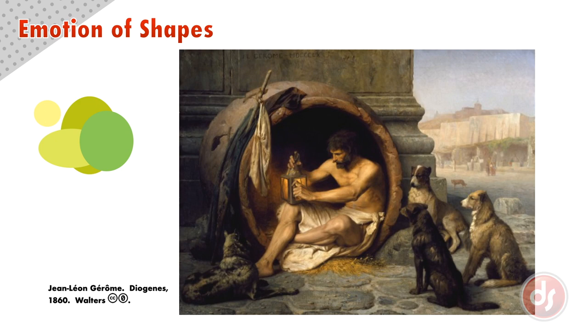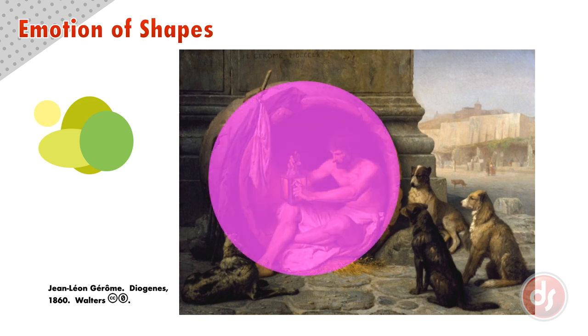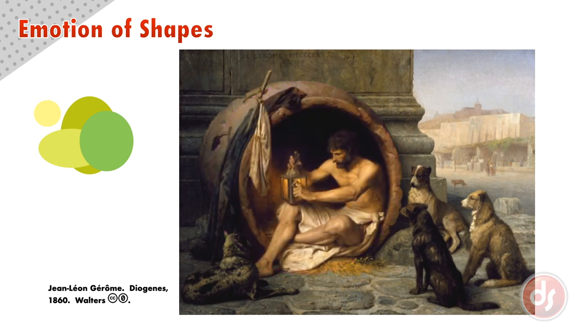Jerome's painting of the philosopher Diogenes shows him comfortably sitting in his home, a large clay pot. He is surrounded by dogs which were symbols for his philosophy of cynicism. The large circle of the pot dominates the design and contains Diogenes. This makes him feel safe and protected in his humble abode.